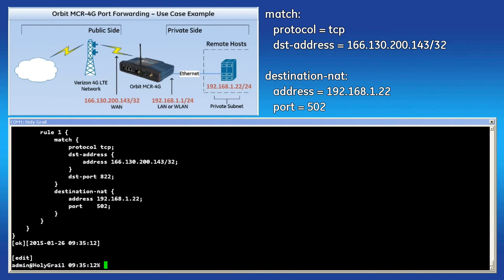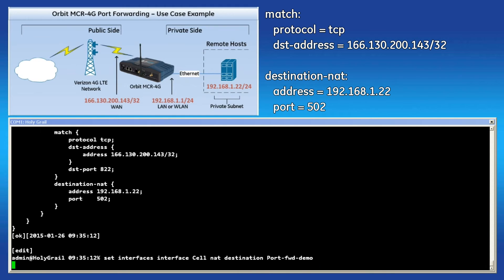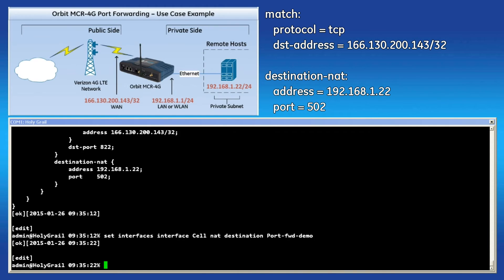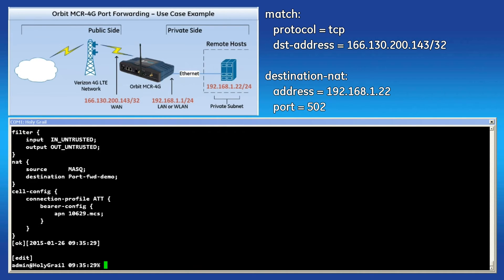The final step is to apply this rule to the interface you wish the IP traffic to be forwarded. In this case, the WAN interface is the cell. Set the destination NAT to the newly created rule set. A final show command displays the configuration is properly set up. Type commit to apply all changes.